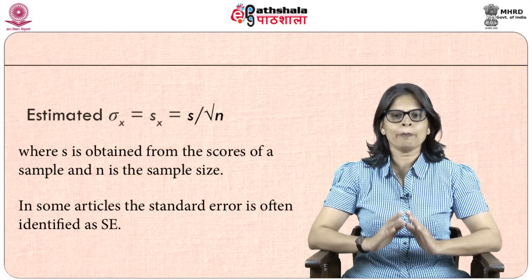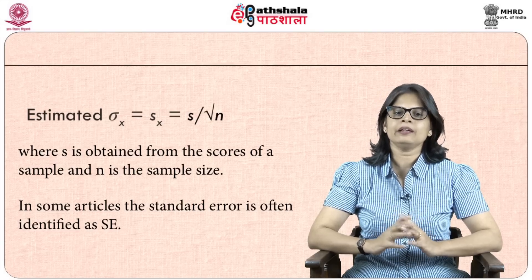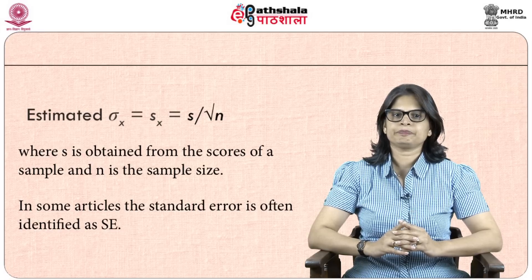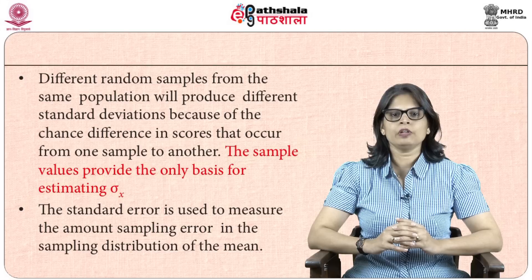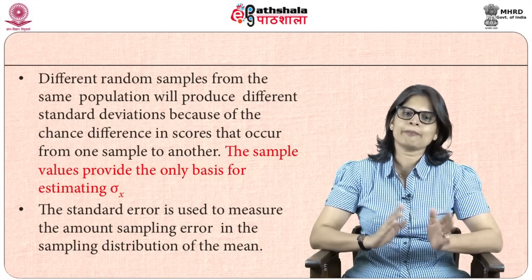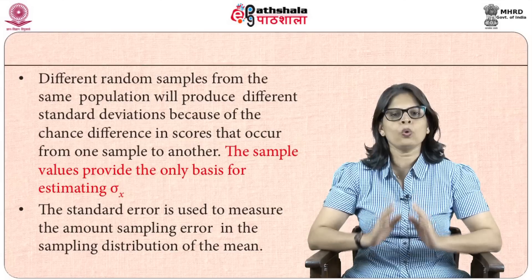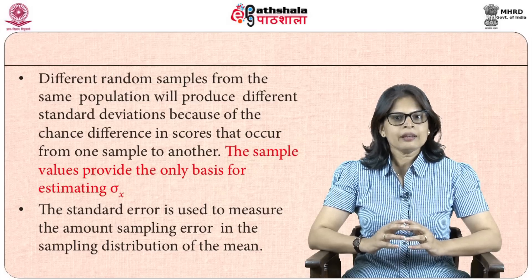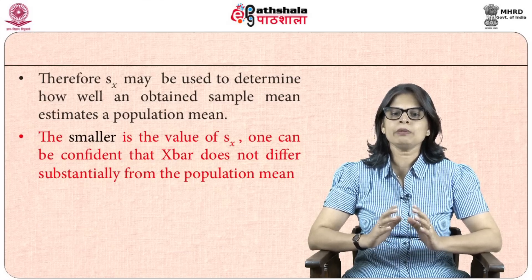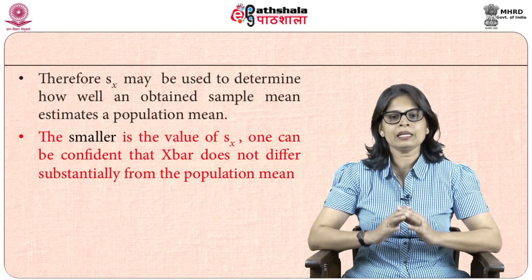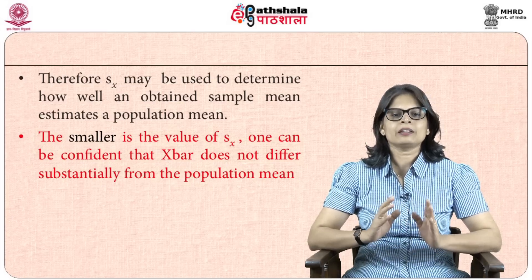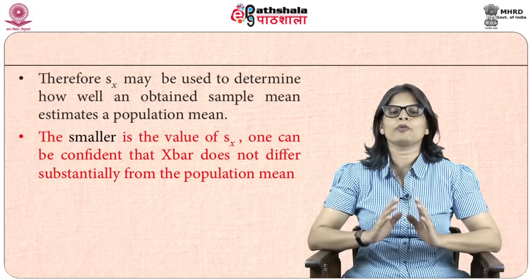Here small s is obtained from the actual values in your sample and n denotes the sample size. In some articles the standard error is also identified as SE. Different random samples from the same population will produce different standard deviations due to the chance factor. The standard error is used to measure the amount of sampling error in the sampling distribution of the mean. The smaller the value of S-x, the more confident one can be that the sample mean x-bar does not differ substantially from the population mean.